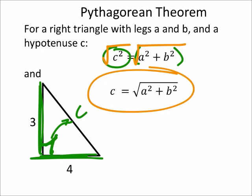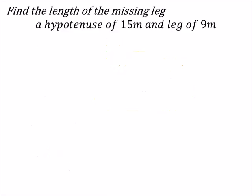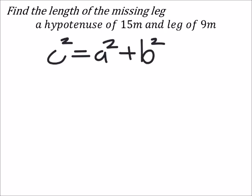But they're not always going to ask you to find the hypotenuse, so we may have to refer back to the original equation, which is right here. Find the length of the missing leg. So we have a hypotenuse of 15 meters and a leg of 9 meters. Looking at the Pythagorean theorem, c² equals a² plus b², where c is the hypotenuse.